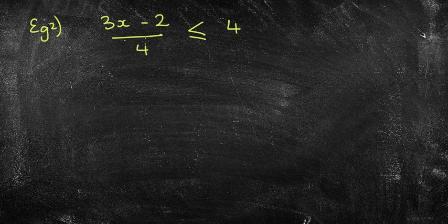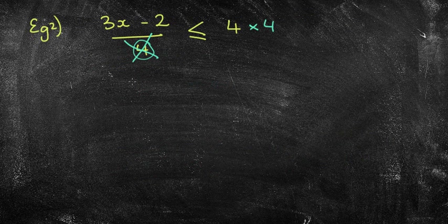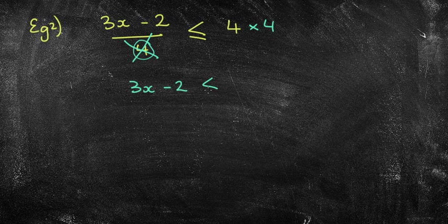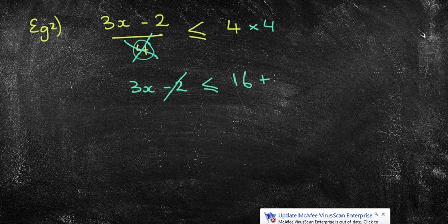Okay. So hopefully you recognize here that the 4 was the most by itself. It was downstairs, if we call the house the equation. The opposite of divide by 4 would be times by 4. I'm going to clean it. So 3x take away 2 is less than or equal to 16. I'm now going to get rid of the minus 2.